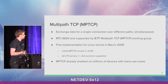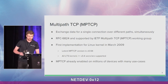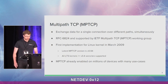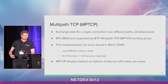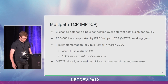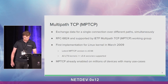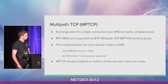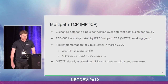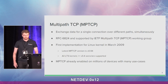About Multipath TCP: in one sentence, it allows exchanging data for a single connection over different paths, and it can be simultaneous. We are breaking the assumption that one connection is linked to five tuples. Thanks to that, we can have more redundancy, more bandwidth, and support handover or mobility use cases. It's not a new protocol because there is an RFC about that, and there is also a working group at the IETF.